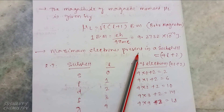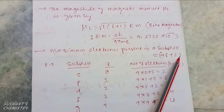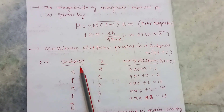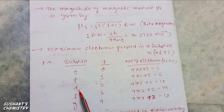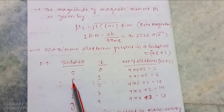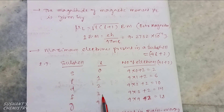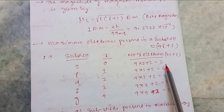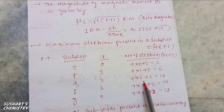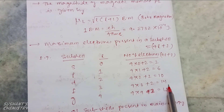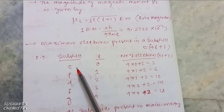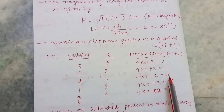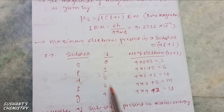The maximum number of electrons present in a sub-cell equals 4l plus 2. To calculate the maximum electrons, consider the sub-cells s, p, d, f, and g with l values 0, 1, 2, 3, and 4 respectively. Using the 4l+2 rule: s gets 2, p gets 6, d gets 10, f gets 14, and g gets 18 electrons maximum. So s sub-cell holds 2 electrons, p holds 6, d holds 10, and f holds 14 electrons.